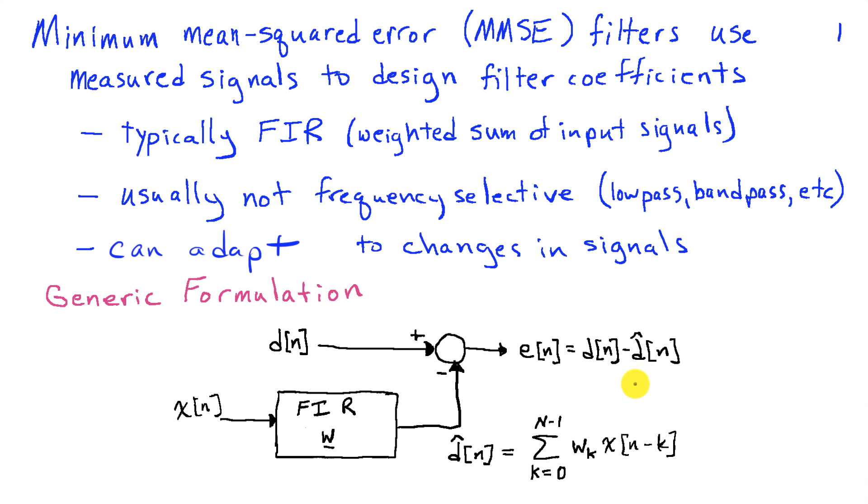And our error then is the difference between our actual D of n and our estimate of D of n. And this is a very powerful framework that can be applied to a lot of different problems. We're going to look at a couple of examples of problems that fit this framework. But there are many more.